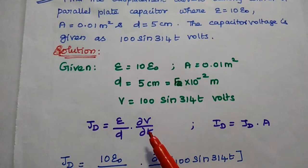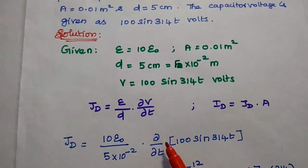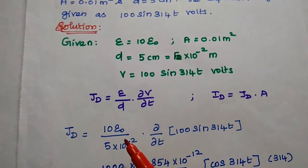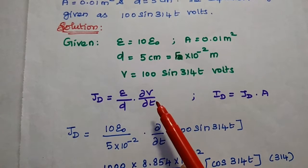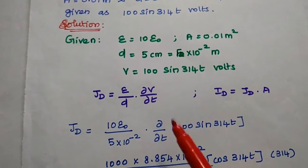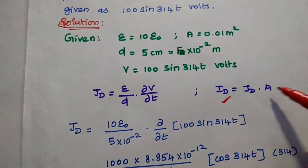The formula is the displacement current density Jd equals epsilon by D dou V by dou T. If we want to find out displacement current, we can use the formula Jd into A.